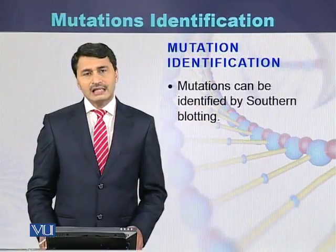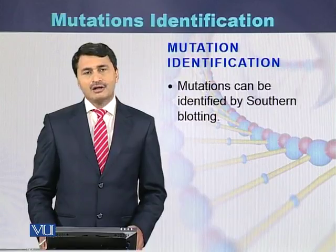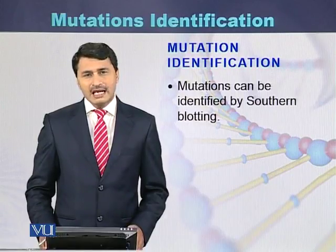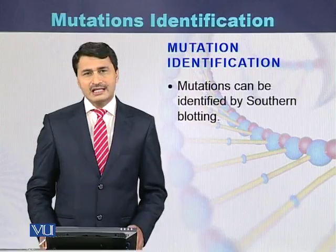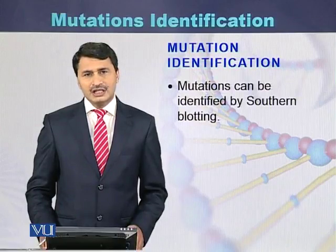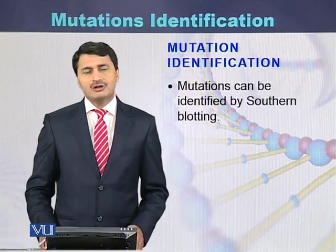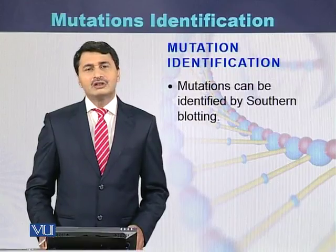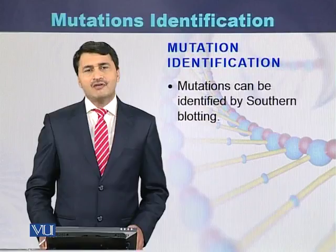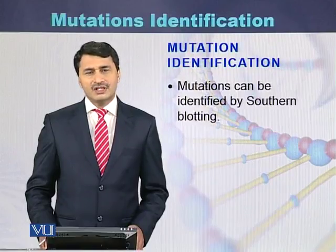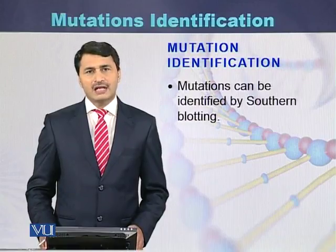So mutations, single nucleotide polymorphisms, or any change present at a particular location — if due to that change the restriction enzyme cannot identify that particular sequence — can be identified based on the difference between the DNA sequence of a normal individual and the DNA sequence of a patient. This is how we can identify mutations using the Southern blot technique.